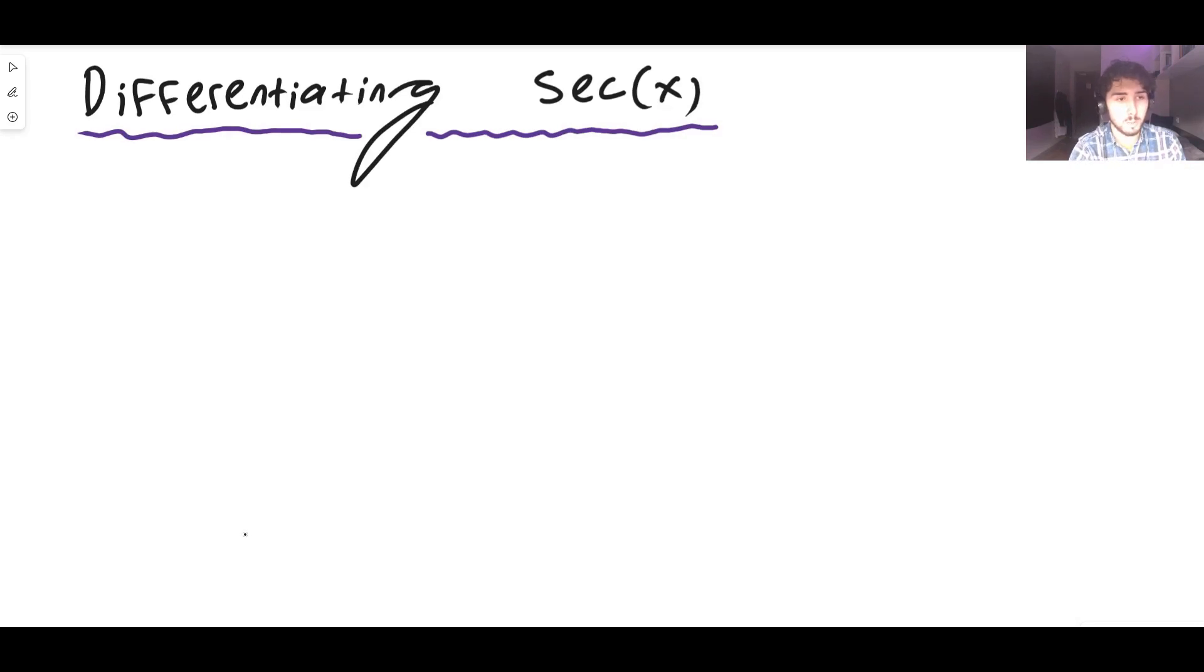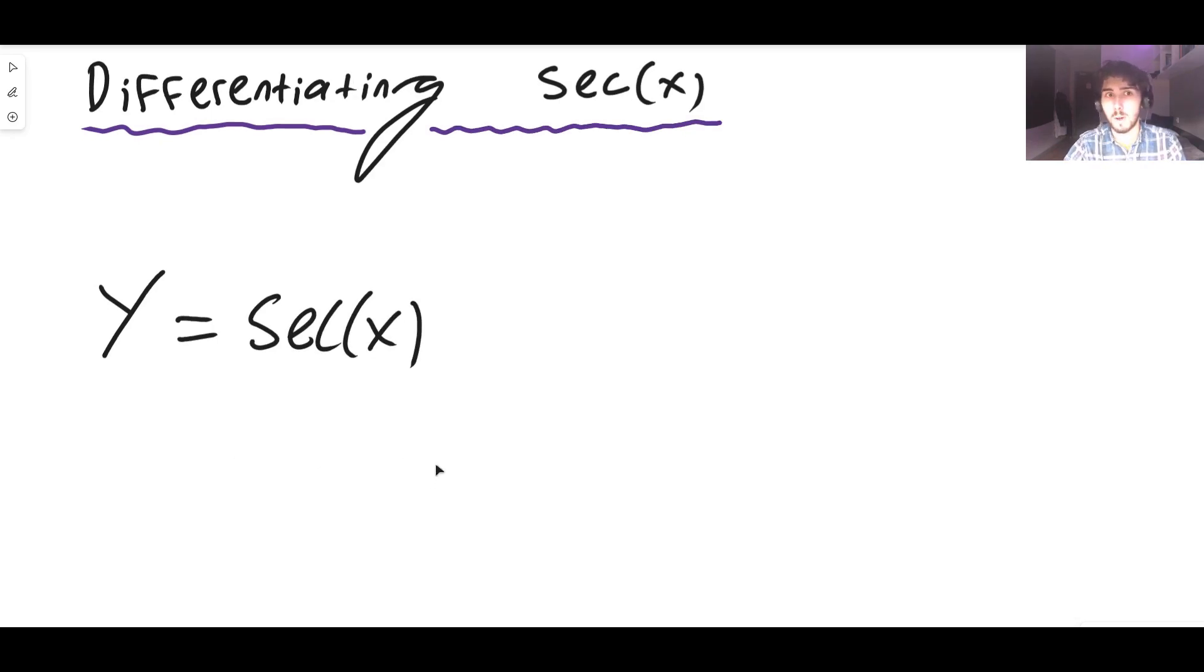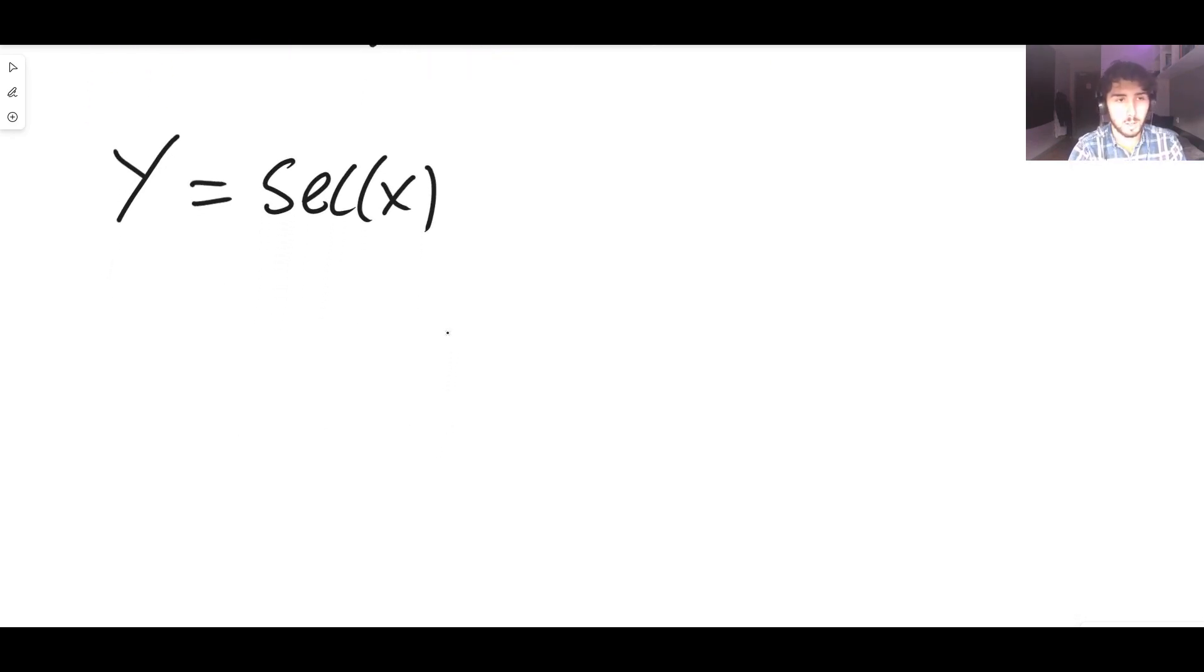Okay the first thing we want to do is rewrite what we're trying to do. So we're trying to differentiate sec x. Let's set y equal to sec x and we want dy/dx of course. Well as I have just mentioned sec x is nothing other than one divided by cos x which is the same thing as cos x to the power of minus one.